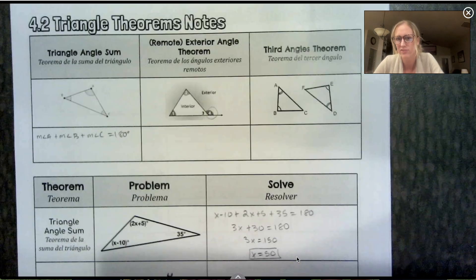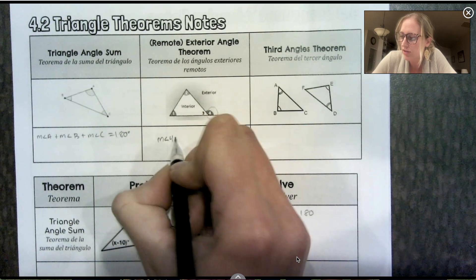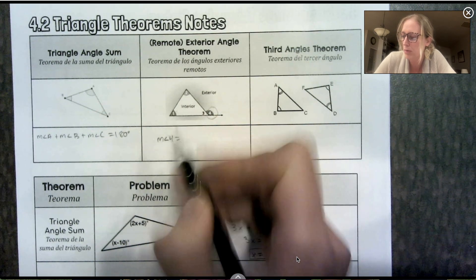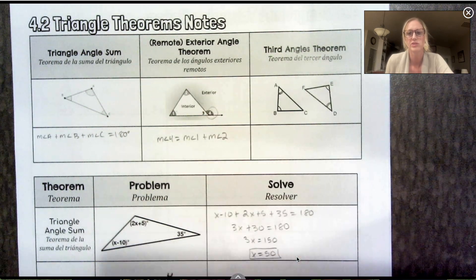This angle is actually equal to the sum of the two angles it's furthest away from. So again, remote, far away, isolated. This angle, angle 4, is equal to the measure of angle 1 plus the measure of angle 2. And again, we can use this to solve some problems involving triangles.